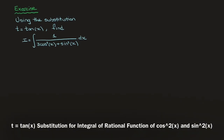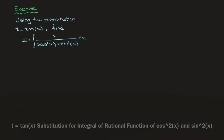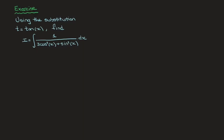Hi everyone. In this tutorial we see how to use the substitution t equals tan of x to find the integral that we have here. That's the integral of 1 over 3 cosine squared of x plus sine squared of x. To do this we're going to follow three steps.